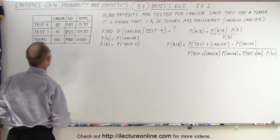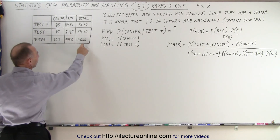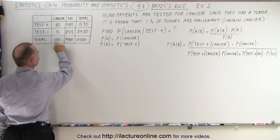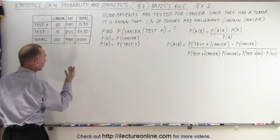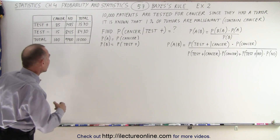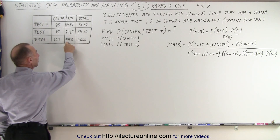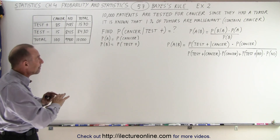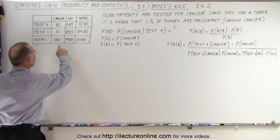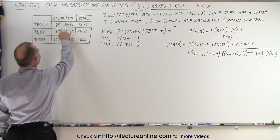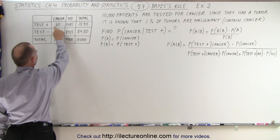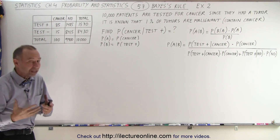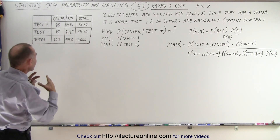Let's take a look at this table. Notice there's a total of 10,000 patients. Of those, 100 will have cancer — that's 1% — because all 10,000 patients had a tumor. 9,900 of them will not have cancer; they do have a tumor but it will be benign. Of those 100 with cancer, 85 will test positive and 15 will test negative, meaning they have cancer but the test will miss it.